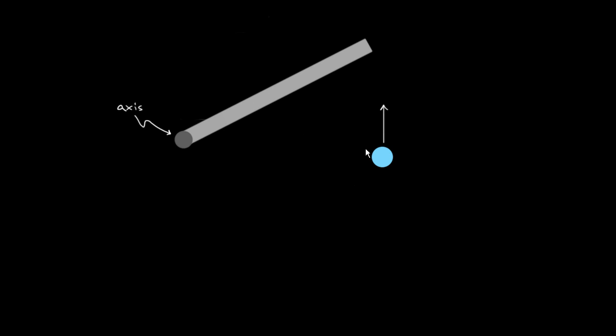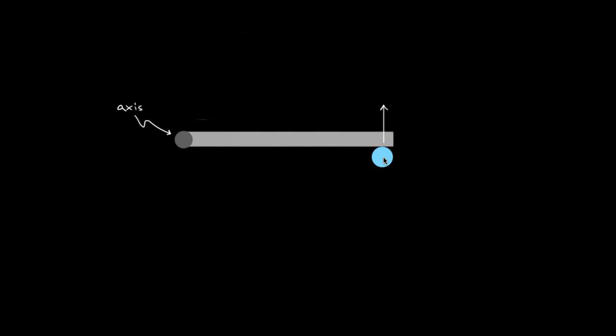Then it did have angular momentum after the ball hit it, because objects rotating in a circle have angular momentum. Where did the bar get its angular momentum? The only thing the bar interacted with was this ball, so the ball must have transferred some angular momentum to the bar. If we believe in conservation of angular momentum, that angular momentum has to come from somewhere — it can't just pop out of nowhere. So the ball had to come in with its own angular momentum, even though it was traveling in a straight line.